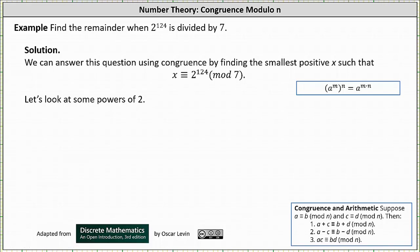We're asked to find the remainder when 2 to the power of 124 is divided by 7. We can answer this question using congruence by finding the smallest positive x such that x is congruent to 2 to the power of 124 mod 7.